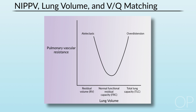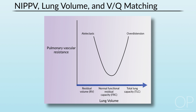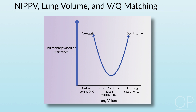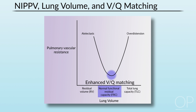On the x-axis is lung volume and on the y-axis is pulmonary vascular resistance. Moving toward total lung capacity favors overdistension; moving toward residual volume favors atelectasis. Either way, pulmonary vascular resistance is increased. By finding the proper lung volume that approaches FRC, pulmonary vascular resistance is optimized and VQ matching can be enhanced. These are important considerations as you titrate your ventilator settings.